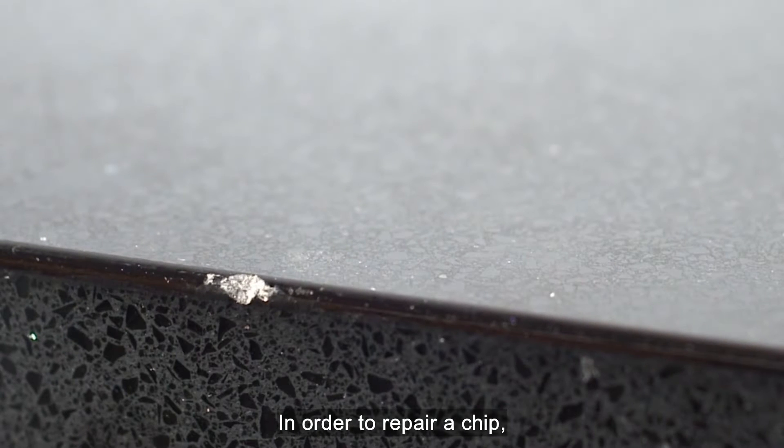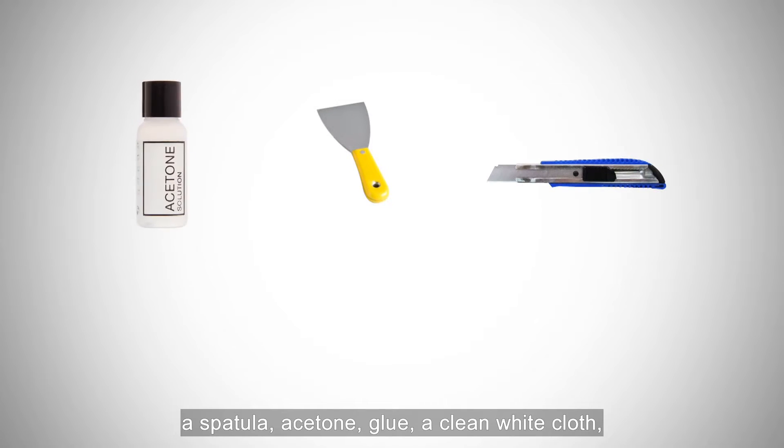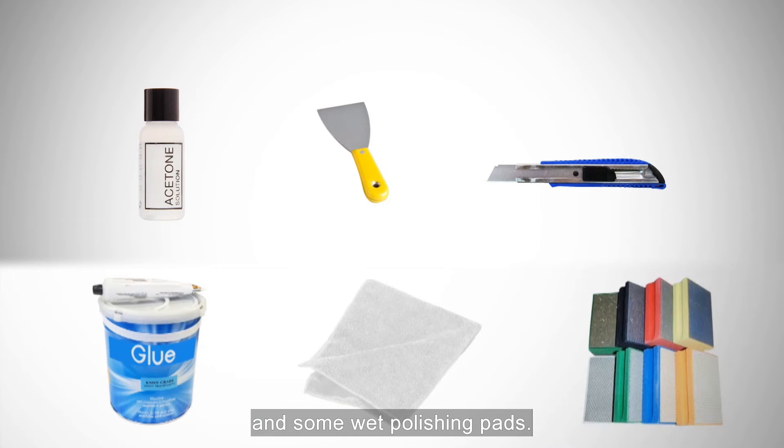In order to repair a chip, you'll need a utility knife, a spatula, acetone, glue, a clean white cloth, and some wet polishing pads.